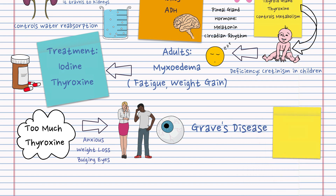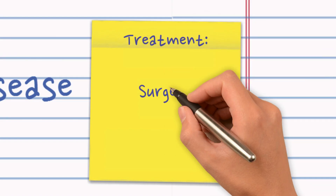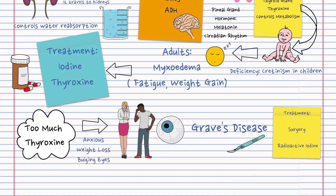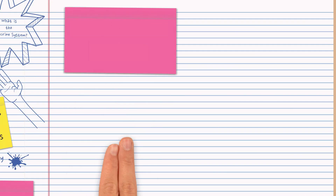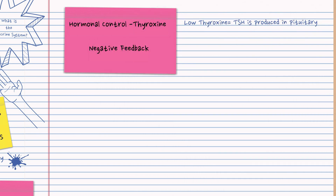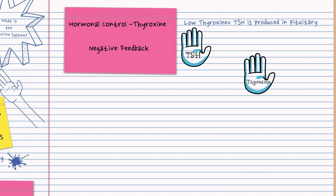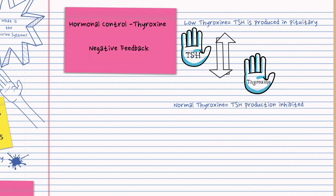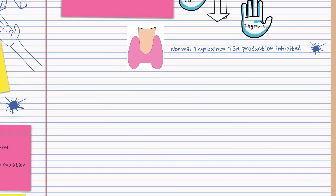If somebody is producing too much thyroxine, it can be treated by surgery — removing part of the gland — or by radioactive iodine. We also need to discuss hormonal control using the example of thyroxine and negative feedback, where the level of one hormone inhibits the production of another. The example used is thyroid stimulating hormone and thyroxine.